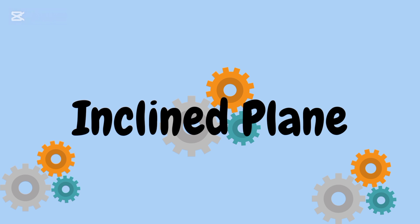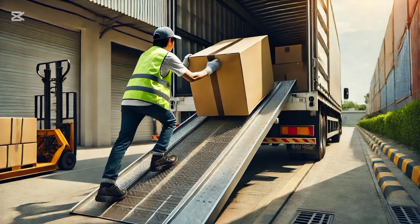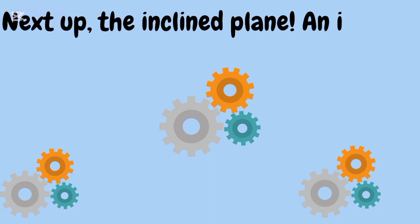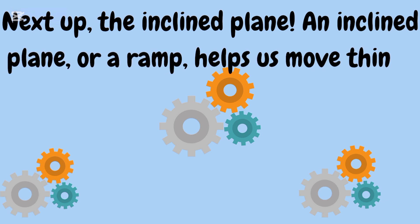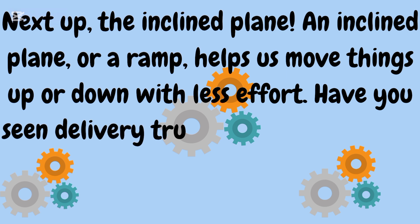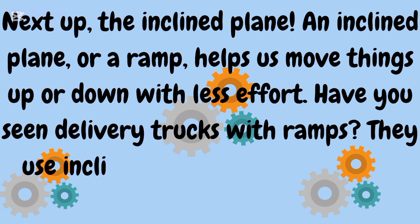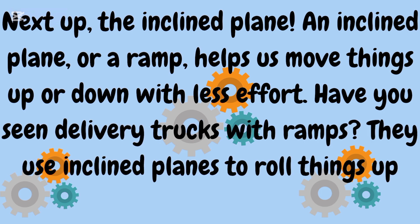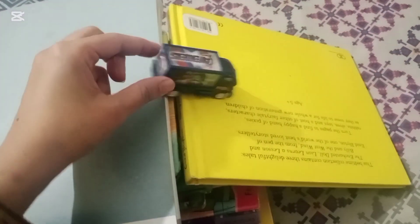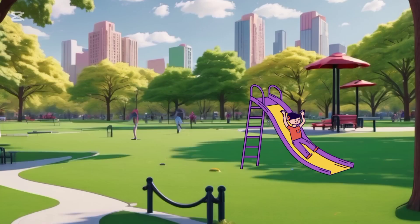Next is the inclined plane. You see an example of an inclined plane in a picture. An inclined plane, or a ramp, helps us move things up or down with less effort. Have you seen delivery trucks with ramps? They use inclined planes to roll things up more easily. A slide in a park is also a simple example of an inclined plane.